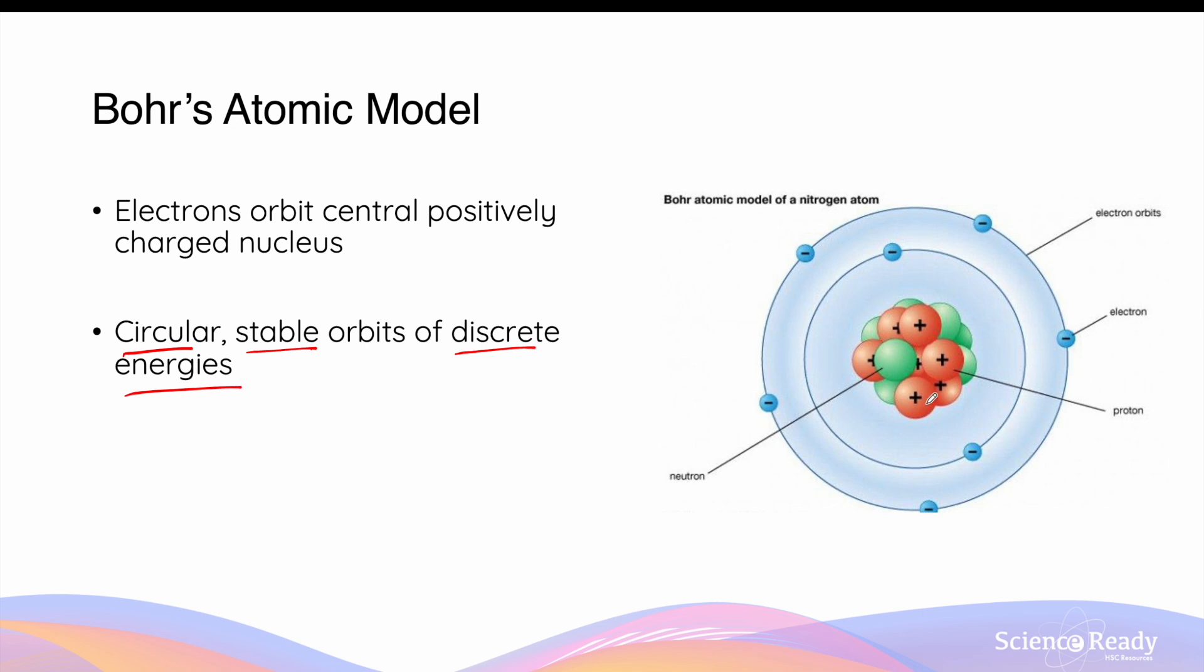In the diagram on the right hand side, this is an example of a Bohr atomic model of a nitrogen atom. The nucleus of a nitrogen atom is composed of protons and neutrons. Electrons in a nitrogen atom are orbiting the nucleus in circular stable orbits. Each orbit has its specific energy level.